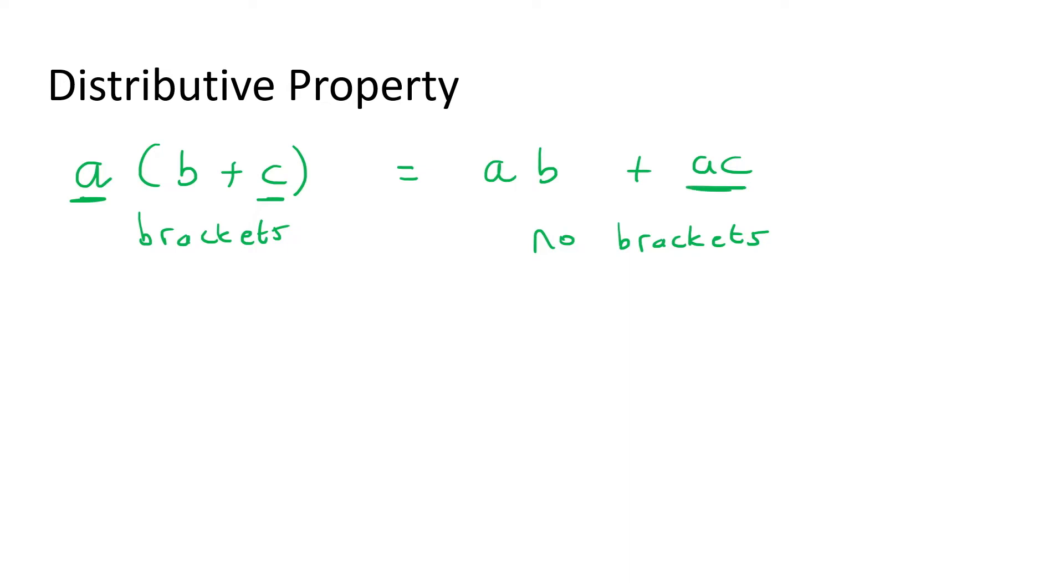But now, what does it actually mean? Well, what it means is the following. If you take, for example, the number 5 and 3 plus 7, what they are telling you is that if you wanted to, you could calculate this by rather saying 5 multiplied by 3 plus, and then 5 multiplied by 7. Let's see if it actually makes sense.